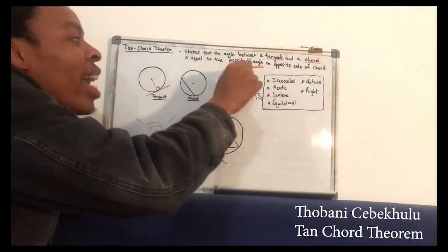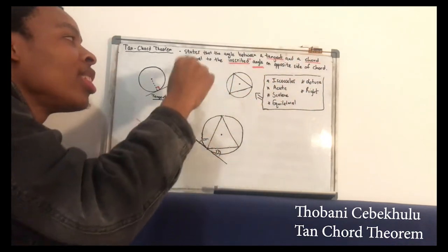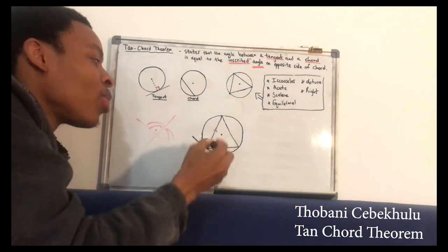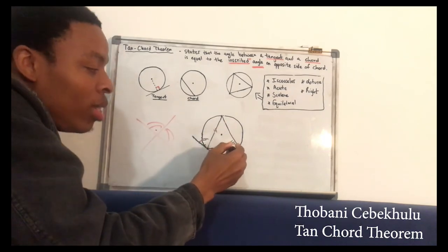But we are concerned with the angle on the opposite side of the chord which makes the angle with the tangent line, which is this chord. So the opposite angle is this one. So this angle is equal to this angle.